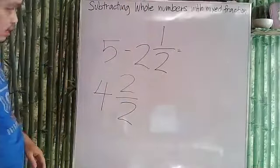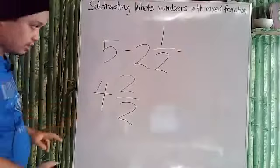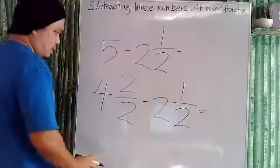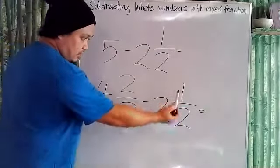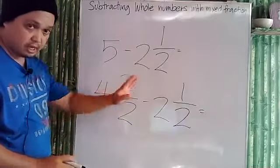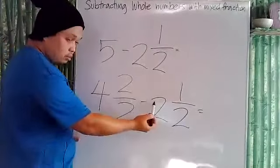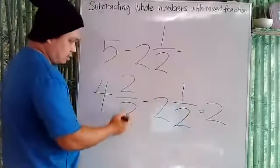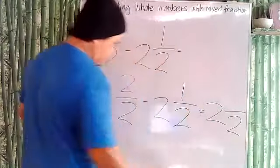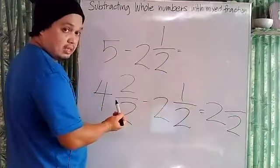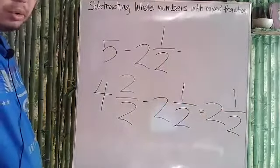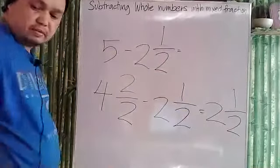Now that five is changed into the mixed number four and two-halves, we can subtract two and one-half. They are the same structure with the same denominator. Subtract the whole numbers: four minus two is two. For the fraction, keep the denominator two and subtract the numerators: two minus one is one. So our answer is two and one-half.